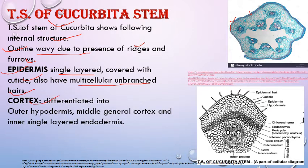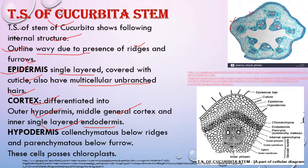The cortex is also differentiated into outer hypodermis, which is collenchymatous, a middle general cortex, and an inner single layer of endodermis — again similar to Helianthus. The hypodermis is collenchymatous below the ridges, while below the furrows — the depressions — the hypodermis is parenchymatous. This is the key difference.